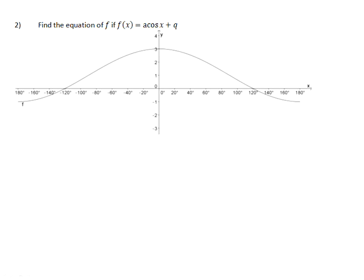Number 2, find the equation of f if f of x is equal to a cos x plus q. So now we need to look at this graph, and we need to see if we can figure out what the values of a and q are. Now we know that the a on a cos graph is the amplitude, and we can calculate that by finding the difference between the maximum y and the minimum y, and dividing it by 2.